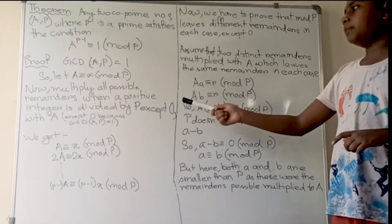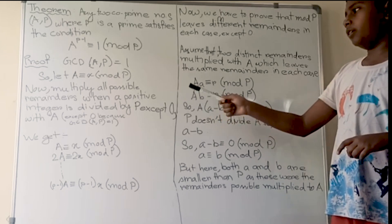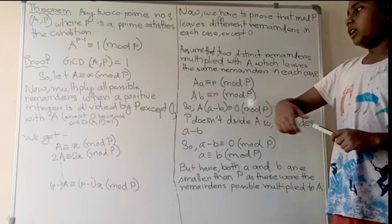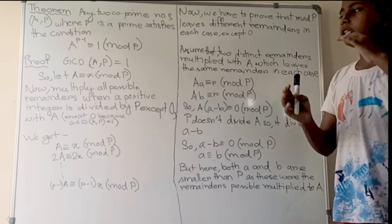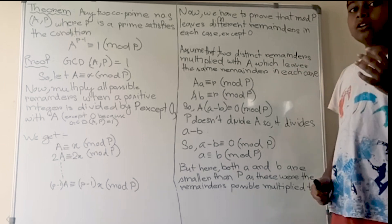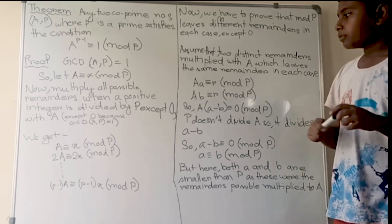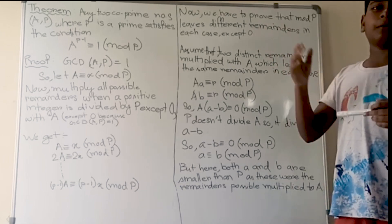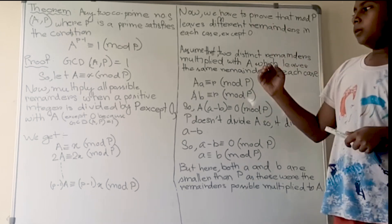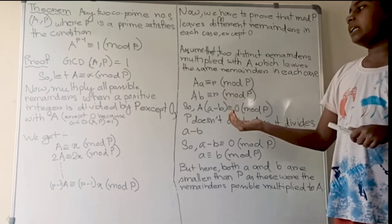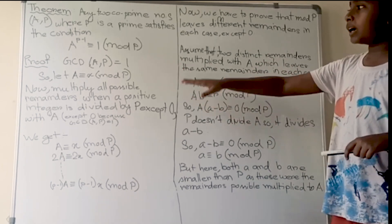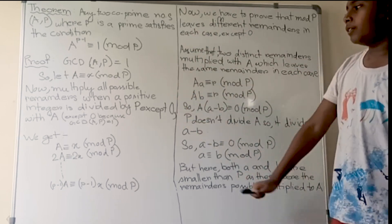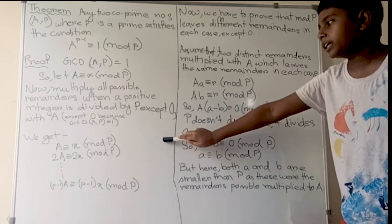Now we will multiply all possible remainders when a positive integer is divided by p, except 0, with a. The possible remainders when dividing by p are 0, 1, 2, 3, up to p minus 1. We exclude 0 because p does not completely divide a.